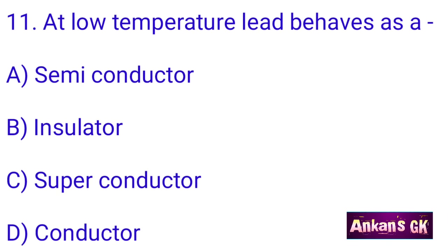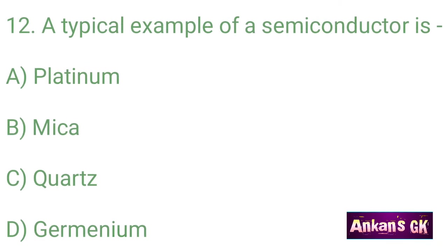At low temperature, lead behaves as A — the answer is B: insulator. A typical example of a semiconductor is — the answer is D: Germanium.